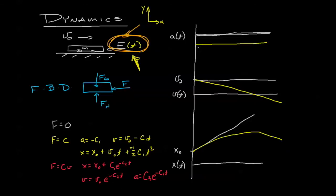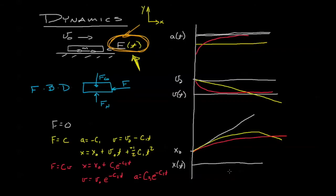For acceleration, that exponential decay means we're going to have a pretty high negative acceleration that decreases toward zero. Our velocity is going to start off at v0 and decrease exponentially. Finally, our position is going to start off here, begin tangent to the initial slope, and then approach some limiting position. It's never going to decrease because the force is always fighting the velocity — there's no way to make that velocity go negative.